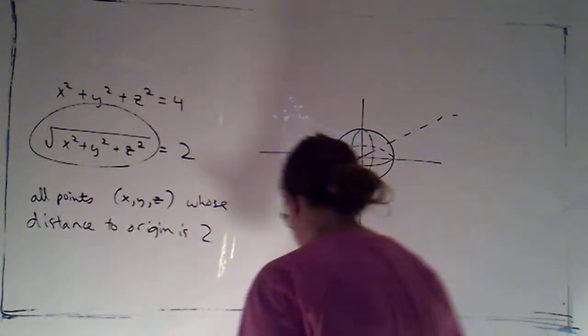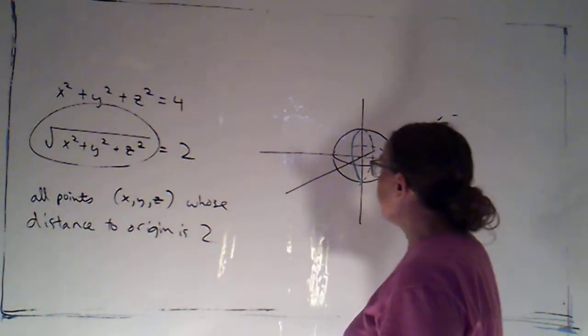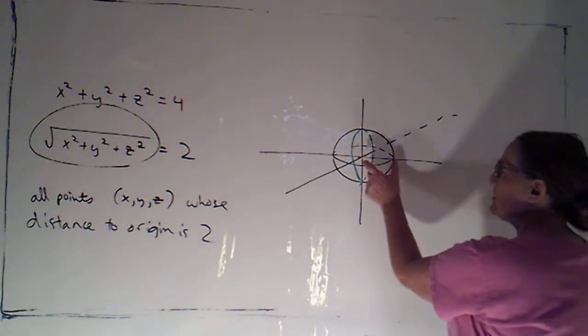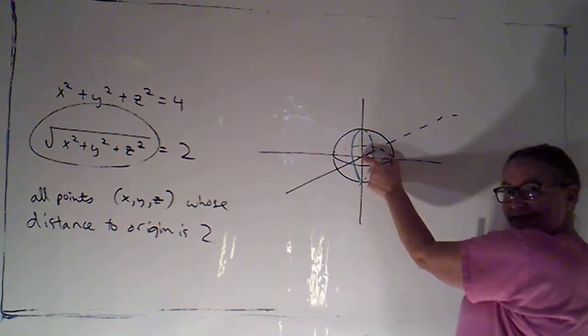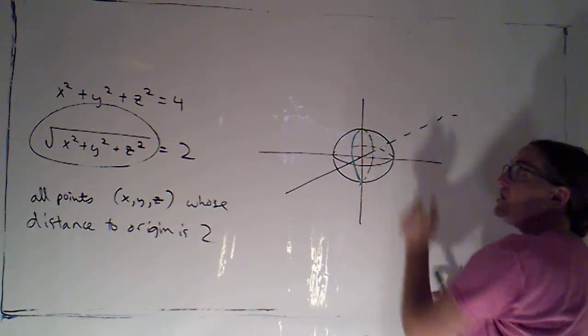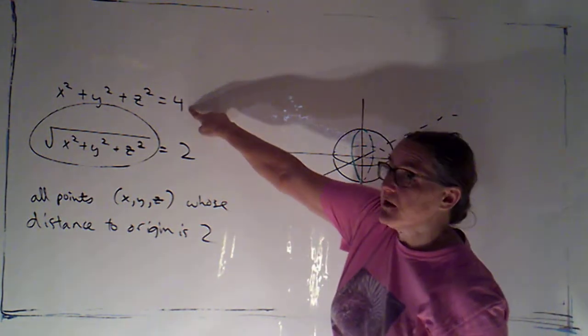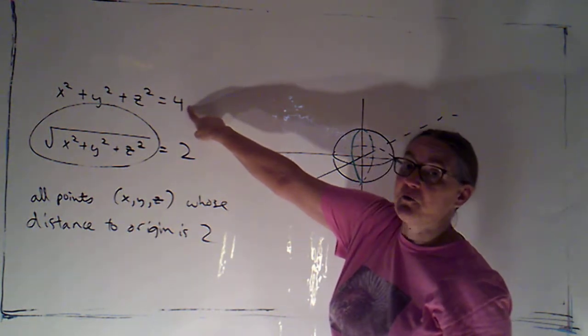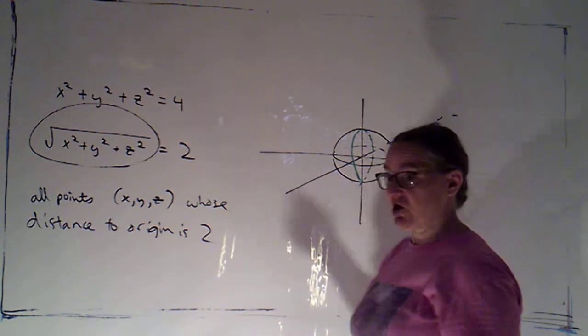This circle happens to be centered at the origin. I didn't use any tick marks here, but this distance, this radius, would actually be 2. Do be careful. Notice that in the original equation that didn't have the square root in it, this was the radius squared that showed up.